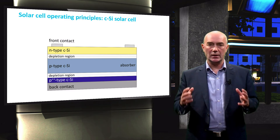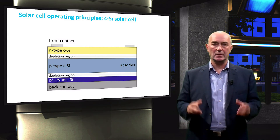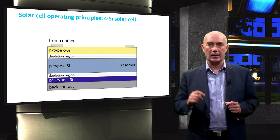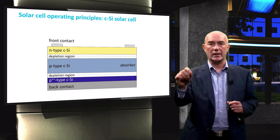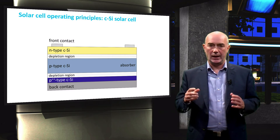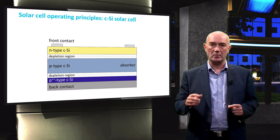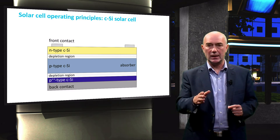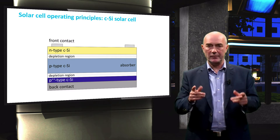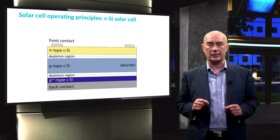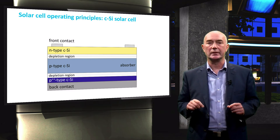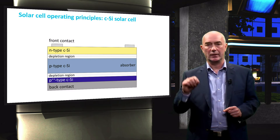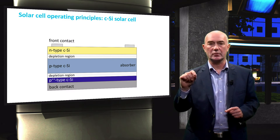At the junction of P-type and N-type crystalline silicon layers, a region called the depletion region is created. Another depletion region is formed between the P-type crystalline silicon and the heavily doped P-type crystalline silicon. In the next video, we will dive deeply into the nature and function of this depletion region.